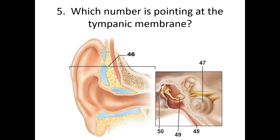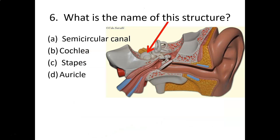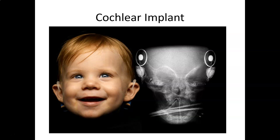For the lab questions: the tympanic membrane is the eardrum, and the cochlea is the part that actually does the hearing. A side note: for some people born with certain types of deafness, a cochlear implant can allow them to hear. The x-ray shown demonstrates all the components implanted under the skin and through the jaw — it's a very complicated machine requiring intensive surgery.